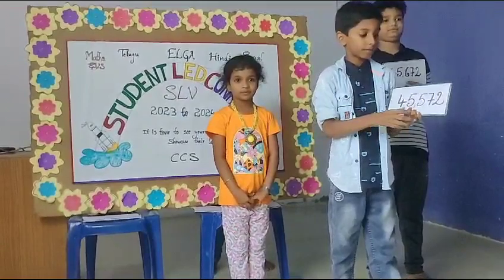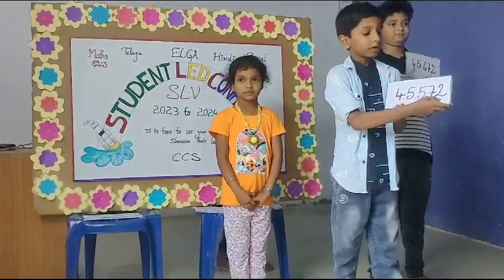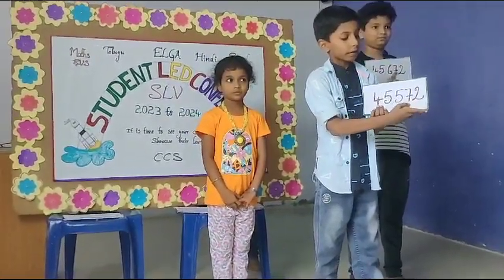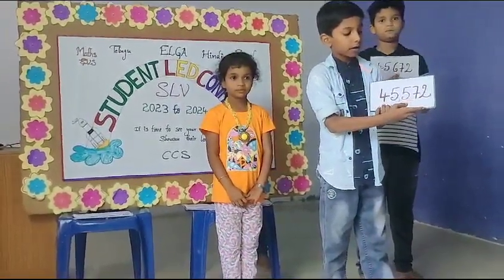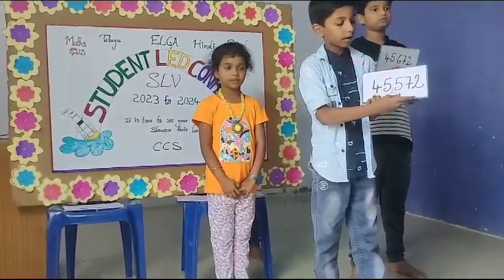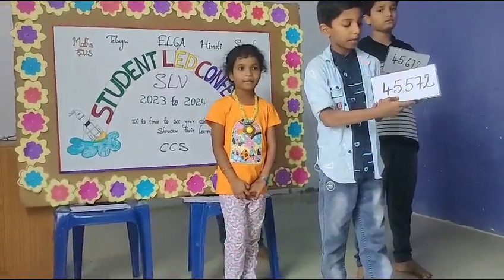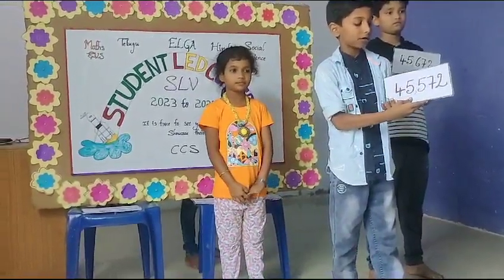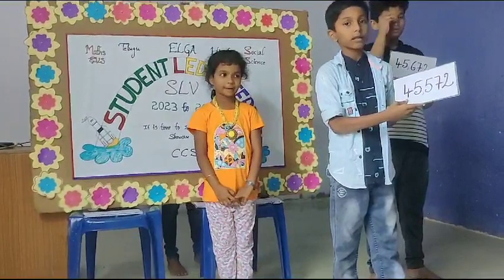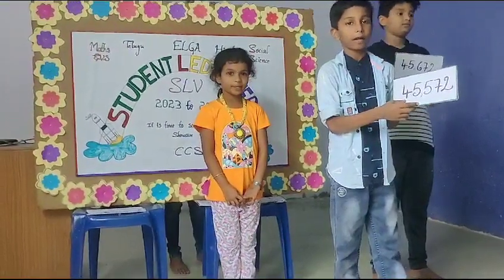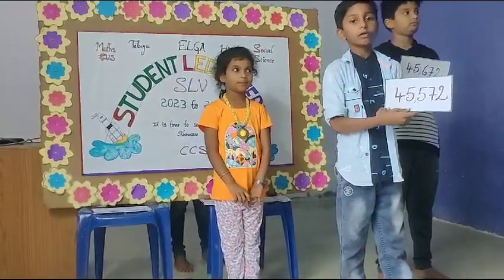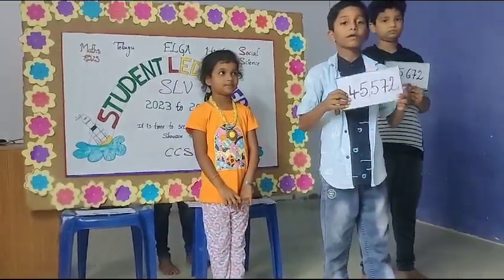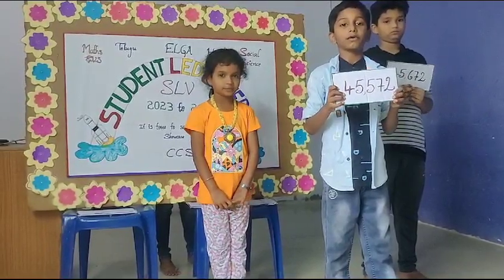Comparing numbers means: 2 is in the 1st place, 7 is in the 10th place, 5 is in the 100th place, 5 is in the 1000th place, 4 is in the 10,000th place. Now this number is 45,572.